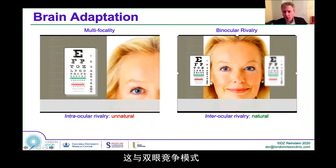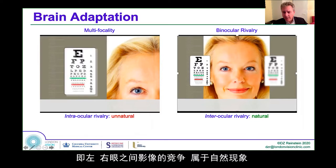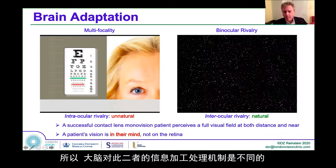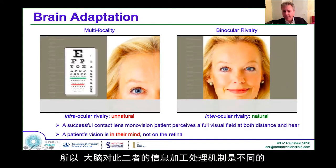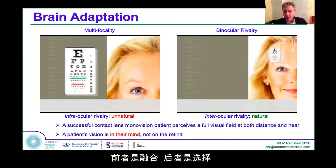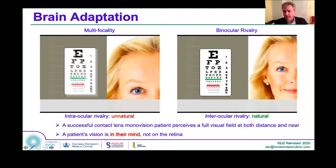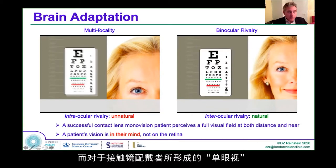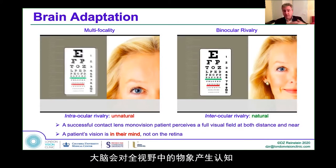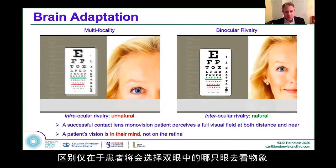Whereas in monovision, we're dealing with a binocular rivalry — one eye has one image and the other eye has another image, and the brain has to choose between one or the other. A successful contact lens monovision patient does not perceive half a field of vision when looking at distance; they perceive a whole field of vision. There is a neural adaptation that occurs in the mind that allows the patient to see the full visual field, despite the fact that one eye is working more than the other.